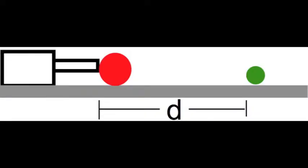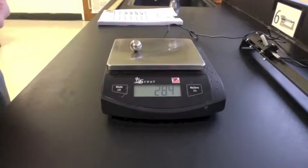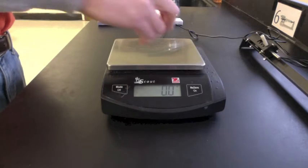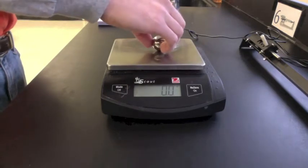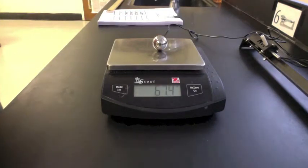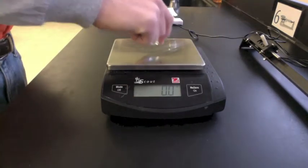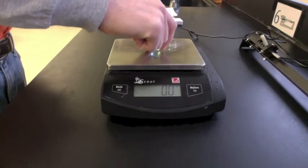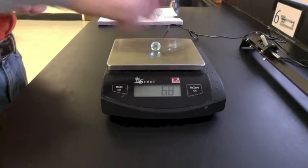Now let's see what will happen if we launch a larger mass marble at a smaller mass marble. The mass of the small steel marble was 0.0284 kilograms. Here's the mass of the large steel marble and the mass of the small glass marble.